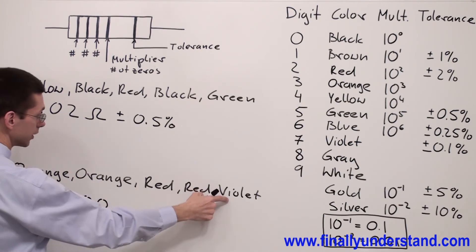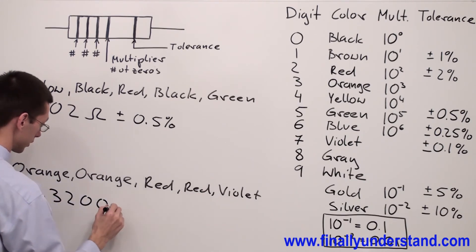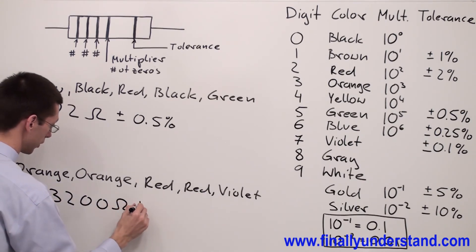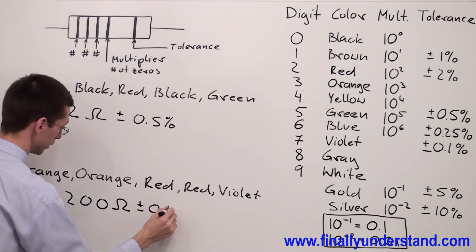My tolerance is 0.1%, giving us 33200 ohms plus minus 0.1%.